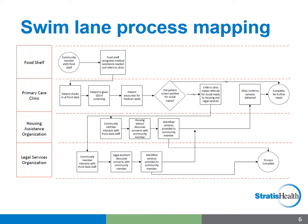You'll also note in this example that the process can end in multiple ways — at the primary care clinic or when services have been delivered by the housing and/or legal services organizations, as indicated by multiple circles which terminate the process on the right-hand side of the diagram. The processes within each organization are likely to be much more complicated, but the point is to document the process to the level needed by the collaborative team. Each organization could, if desired, map out the individual processes that occur within their own organization.